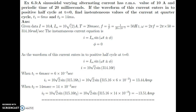Next problem: a sinusoidally varying alternating quantity has a maximum RMS value of 10 ampere and a periodic time of 20 milliseconds. If the waveform enters the positive half cycle at T equal to 0, find the instantaneous value of the current at the quarter cycle, at T1 equal to 6 milliseconds, and at T2 equal to 14 milliseconds. Im equals RMS into root 2, so Im equals 10√2 ampere. T equals 20 ms, so f equals 1/T equals 50 Hz.